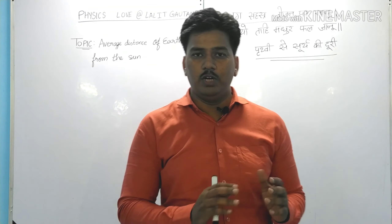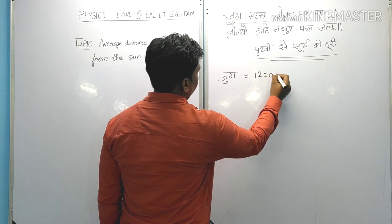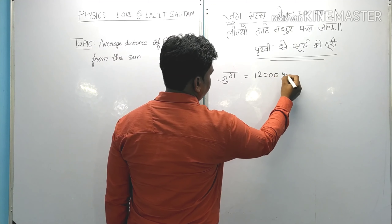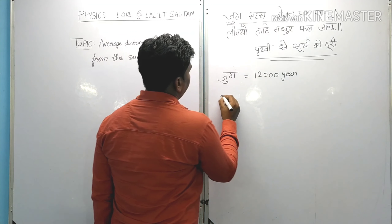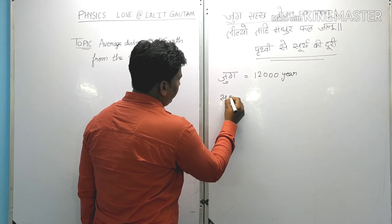Let us have a look at the chopai: 'Jugh Sahastra Jo Jan Parbhanu Lilyo Tahi Madur Fale Janu Prabhu Mudrika Amili Mukmahi Jaladi Langgai Achir Janahi.' Only three words from this chopai can make us able to calculate the average distance from the earth to the sun.